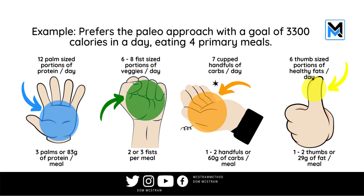Breaking that down into four meals, that's three serves of around 83 grams each. They've got six to eight fist-sized portions of veggies in a day — two or three fists per meal. They get seven handfuls of cupped carbohydrates across the day — one to two per meal. And then seven thumb-sized portions of good healthy fat — one to two thumbs, about 29 grams of fat per meal.